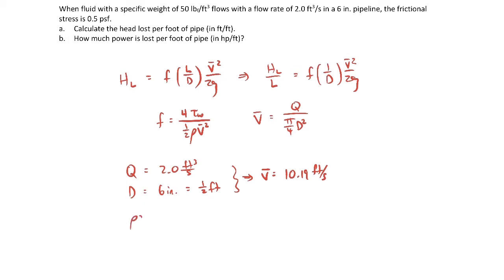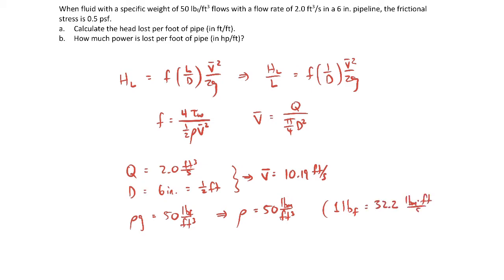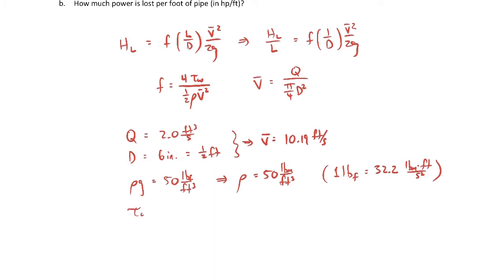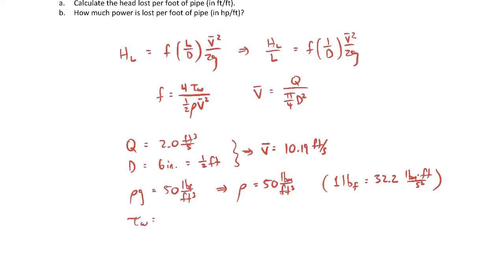We're told the specific weight of the fluid is 50 pounds force per cubic foot, which means the density is 50 pounds mass per cubic foot. Keep in mind that 1 pound force equals 32.2 pounds mass feet per second squared for English unit conversions. We're also told the wall shear stress is 0.5 pounds force per square foot. We can now plug the wall shear stress, density, and average velocity into the friction factor expression.